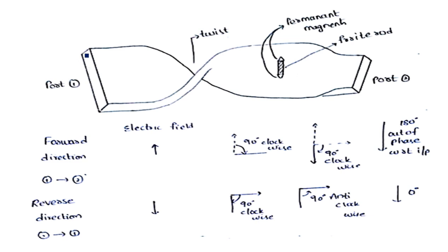The waveguide has two ports because it is a two-port device — this is the first port and this is the second port. It has a ferrite rod placed here after the twist. A twist is also there to provide a 90 degree phase shift in the forward direction.